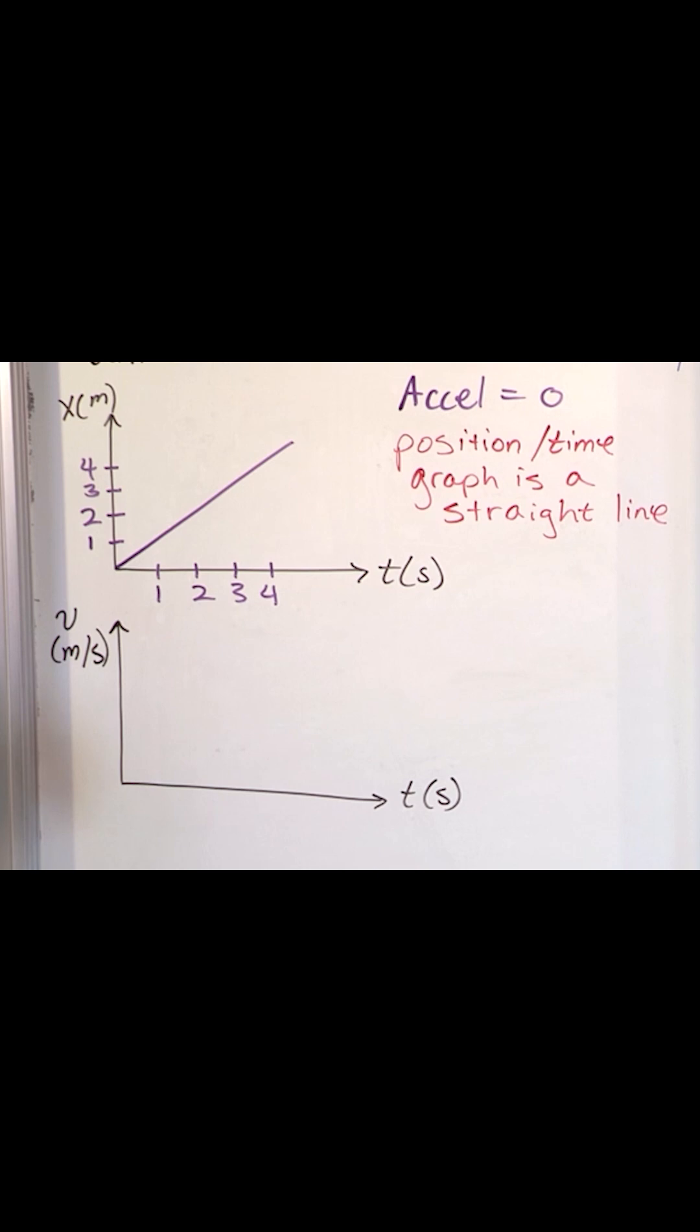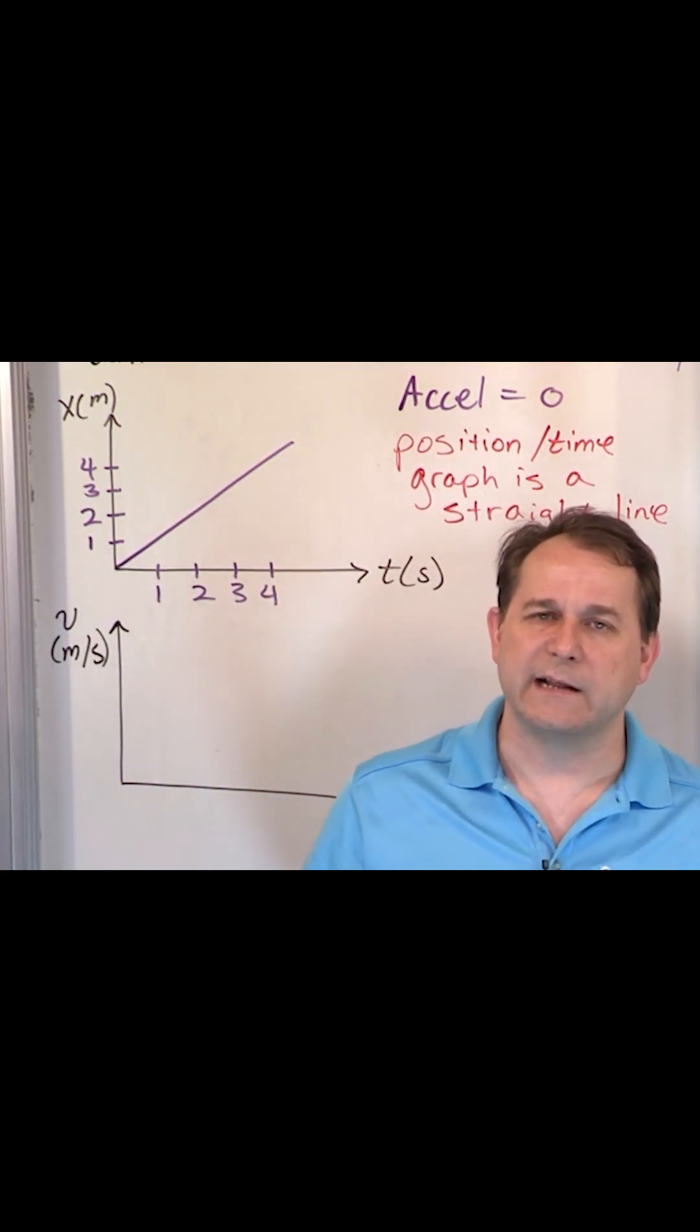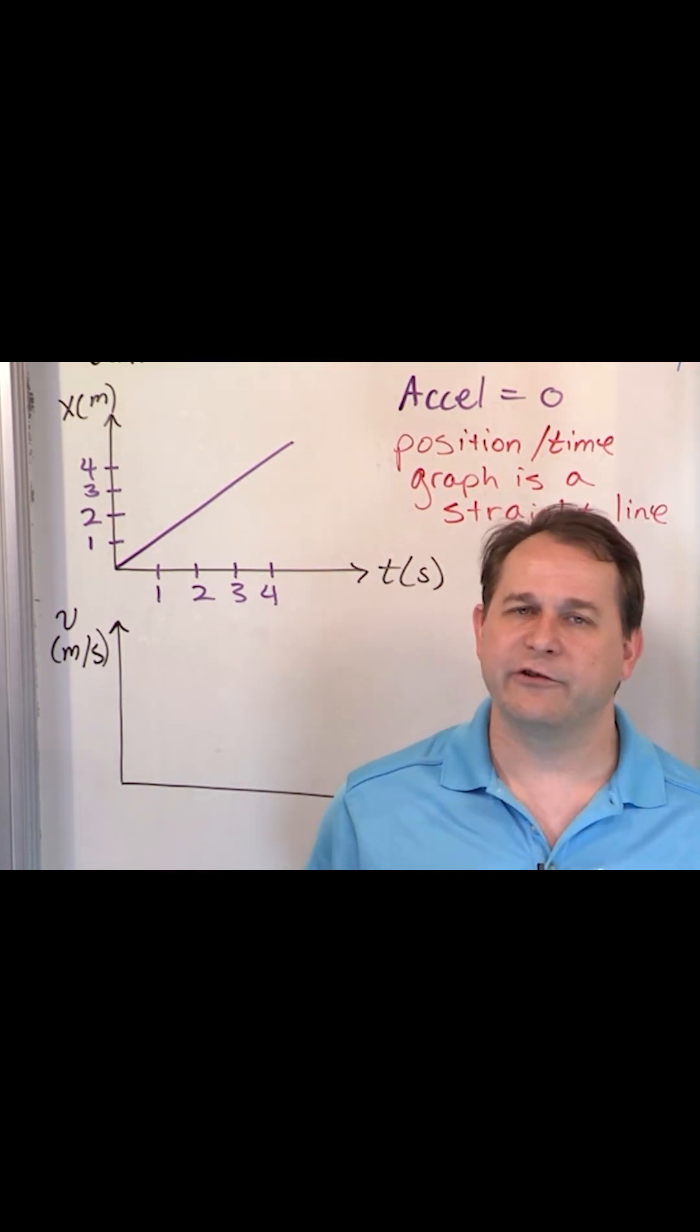What do you think the velocity is going to be? Well we've said over and over again that the instantaneous velocity is going to be the slope in the line tangent to the position curve. But this position curve is just a line and it never changes slope.